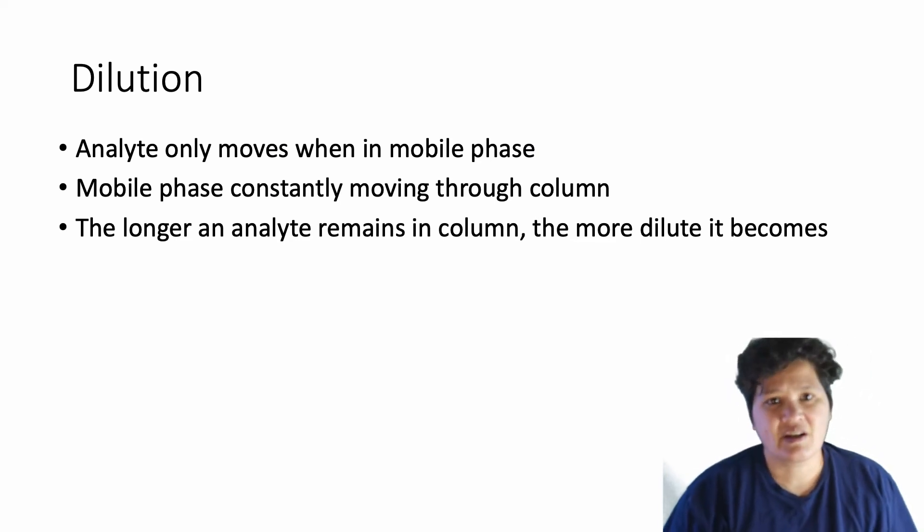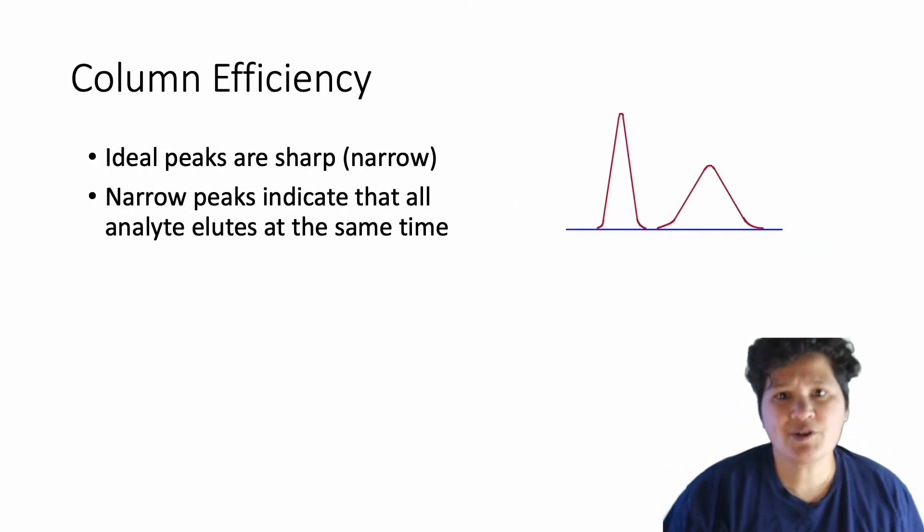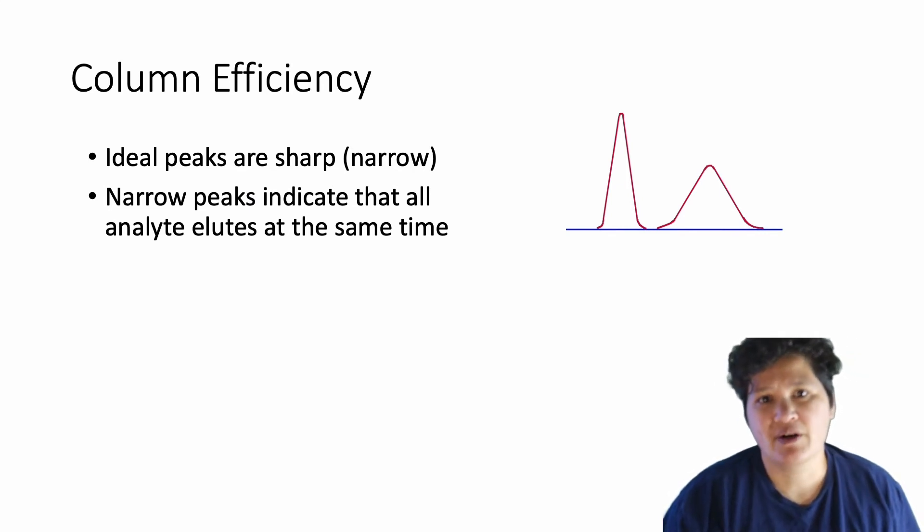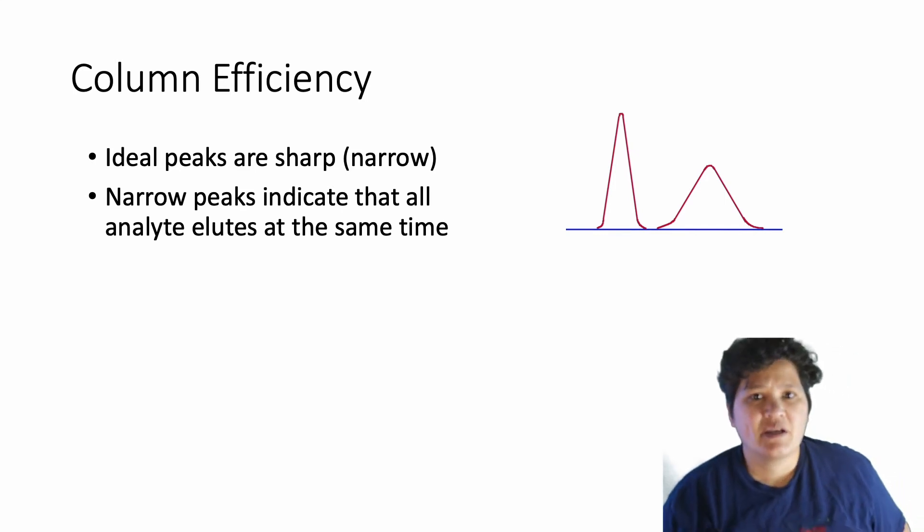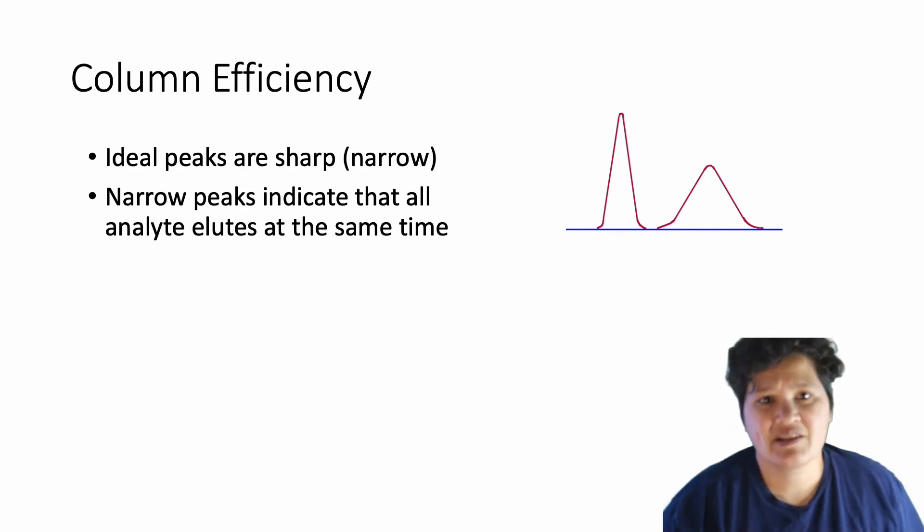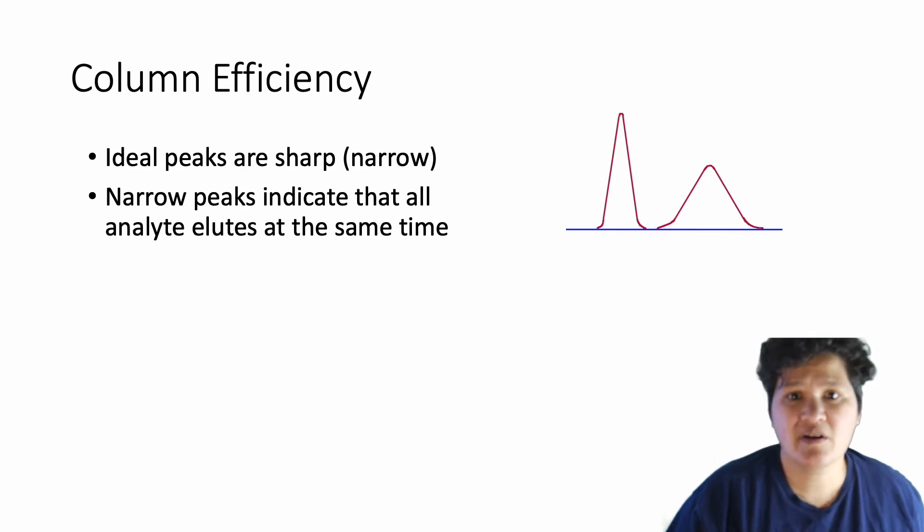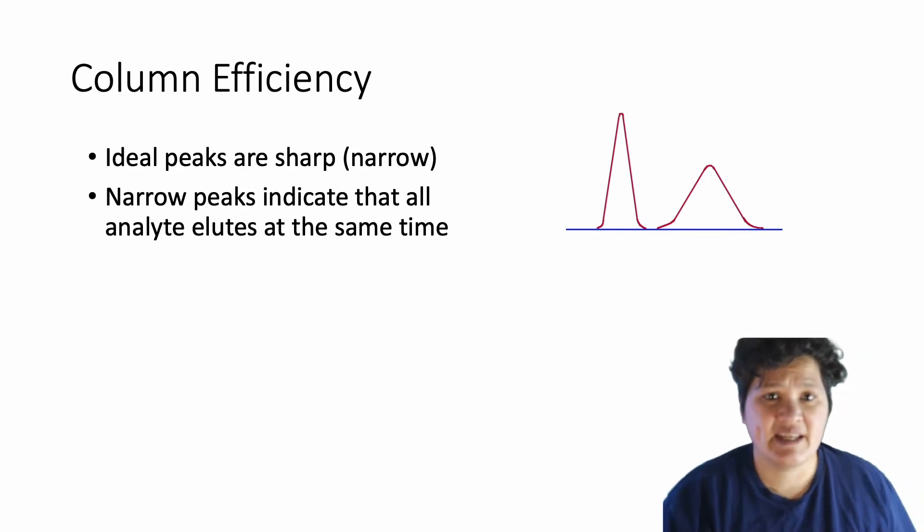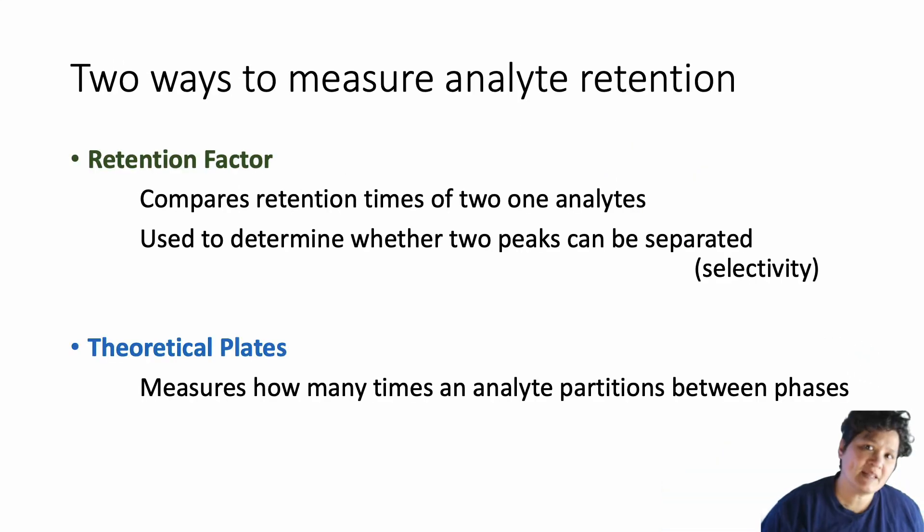So keep that in mind as we start talking about separating one analyte from another. How long analytes stay in the column, or how long they're retained, is very important. A chromatography system is efficiently designed when our analyte peaks come out sharp and narrow. This tells us that all of our analyte is eluting at the same time. If a peak is too wide, the analyte is holding on to the stationary phase too long, and it's being diluted down, and it tends to come out all spread out.